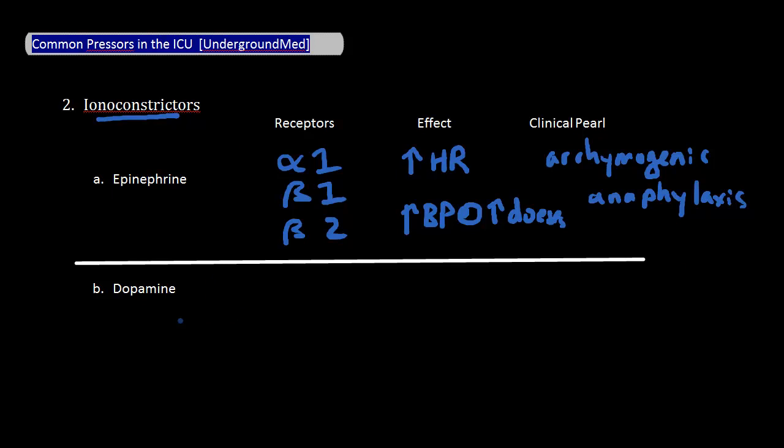Next up is dopamine. According to textbooks, dopamine's actions are dose-dependent. At low doses, it acts on dopamine receptors in the renal and splanchnic circulations. Moderate doses stimulate beta receptors, leading to increased heart rate and contractility.